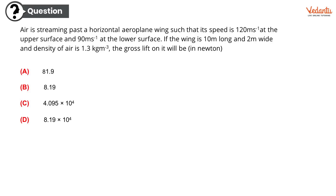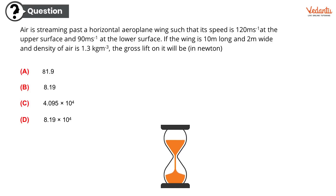The options are option A, 81.9 N; option B, 8.19 N; option C, 4.095 × 10⁴ N; and option D, 8.19 × 10⁴ N. That's interesting. If I apply the theory of cancelling MCQ options, option C could not be the correct answer because there are multiple options with the same magnitude — 81.9 and 8.19 — so it should be either A, B, or D. This is one of the tricks you can apply in your real examination. Have the capability to cancel out a few MCQ options. Just a tip. The correct answer is option D, 8.19 × 10⁴ N, and here goes the solution.